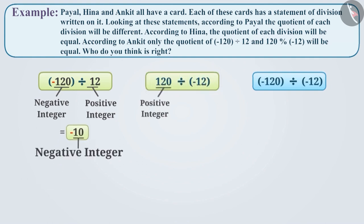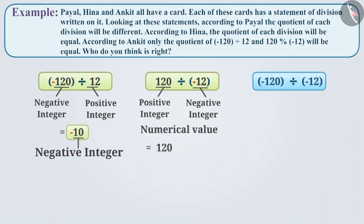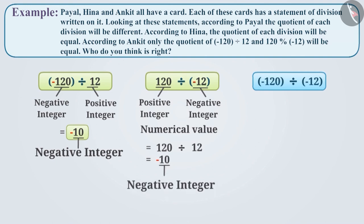In the second statement, a positive integer plus 120 is being divided by a negative integer minus 12. Here too, first we will divide the numerical value of plus 120, that is 120, by the numerical value of minus 12, that is 12. Its quotient will be 10. When a positive integer is divided by a negative integer, the quotient is negative. As a result, the quotient of 120 divided by minus 12 is minus 10.